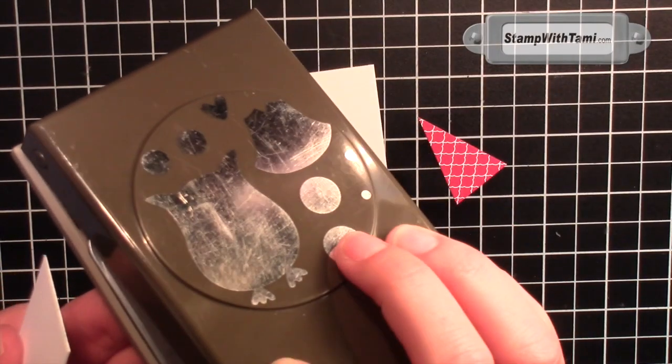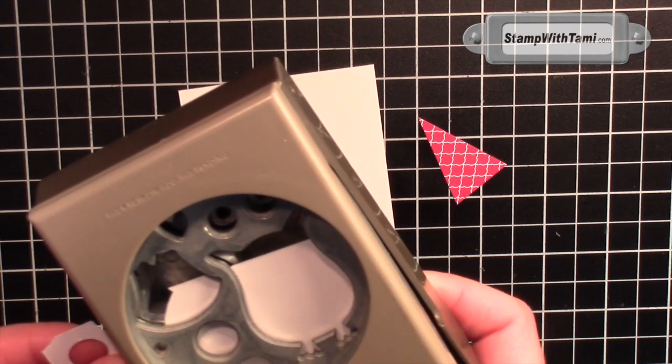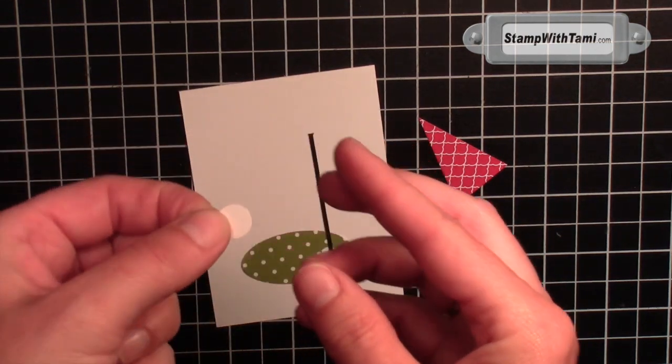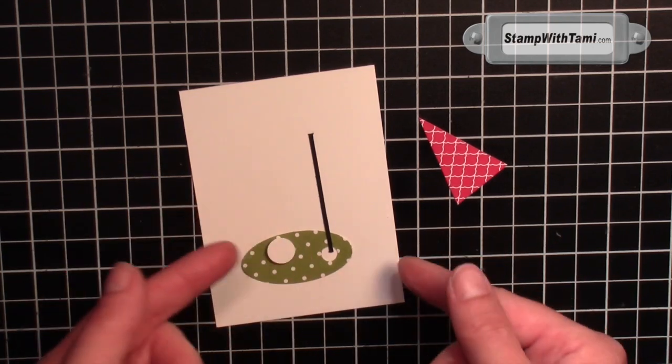Our golf ball actually came from the largest eyeball of the owl punch. Just a little bigger than the half-inch punch. And I used a Stampin' Dimensional on the back of that to make it pop up. So it looks like it's on the green, ready to go in the hole.